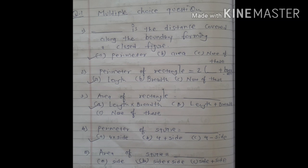Third, area of rectangle equals to length multiply breadth. Perimeter of square, so that is 4 multiply side. Okay, humne bahut saare sum kiye hain.